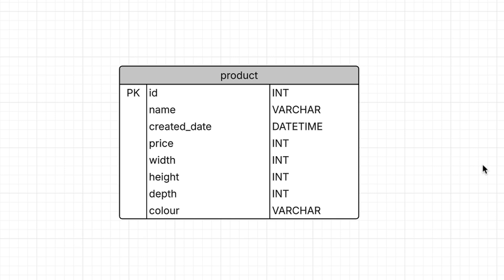Our product table would have the product ID and then a range of columns that represent all of the attributes for a product. Each column would have the appropriate data type, and each row in the table represents a single entity, such as a product. This type of design is best for when the set of attributes is known and stable. For e-commerce stores, they are usually pretty stable — there may be a lot of them, but they are stable. For systems where users can add and change attributes, such as administrators in a CRM, perhaps more flexibility is needed.